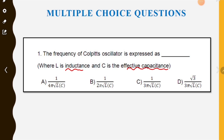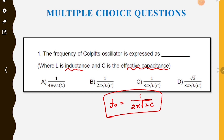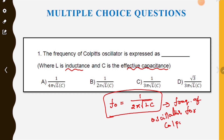The frequency of a Colpitts oscillator is F0 = 1 by 2π√(LC). This is the frequency of oscillation for the Colpitts oscillator. So option B is the correct answer.